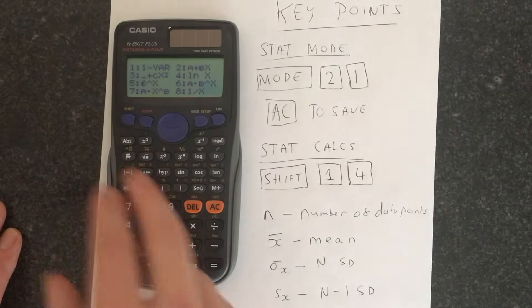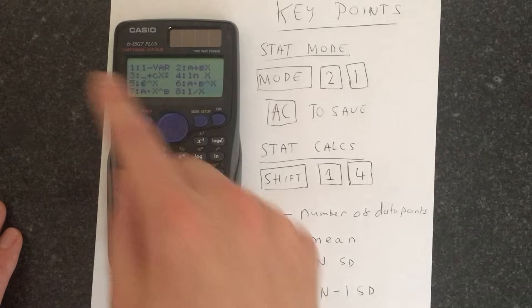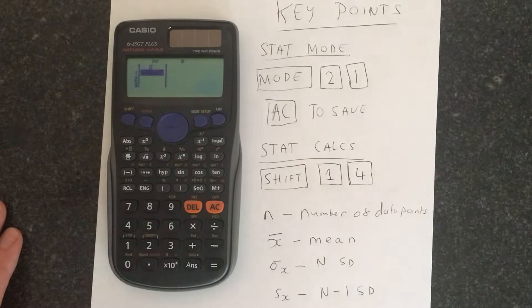You want one variable statistics. This is giving you all the different types of statistics the calculator can do, so we want number 1 for one variable.